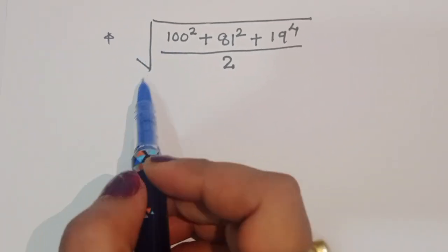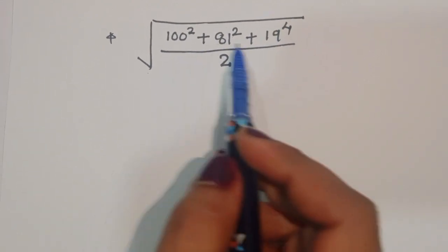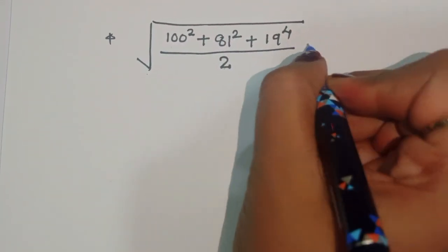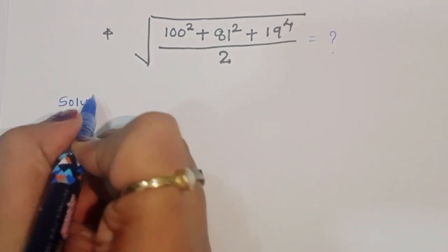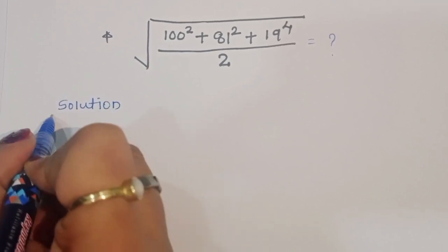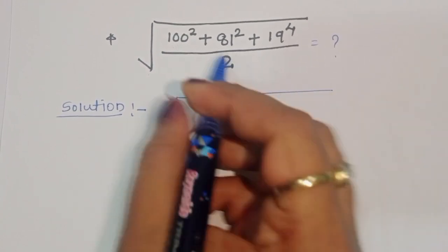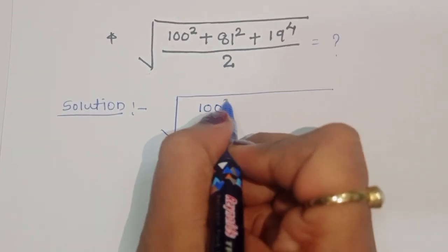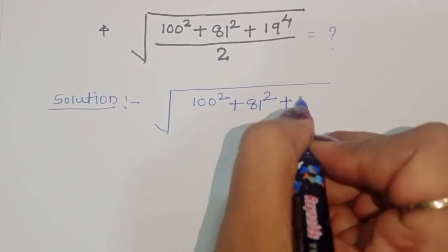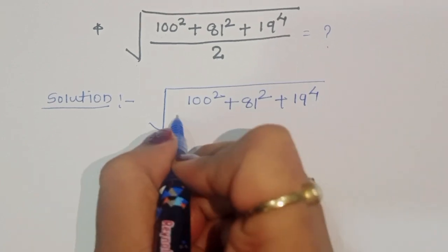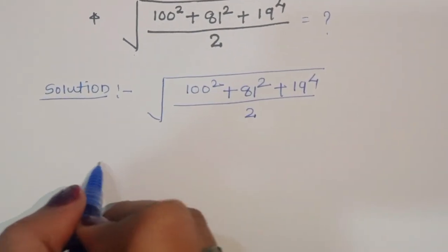The question is: given square root of 100 squared plus 81 squared plus 19 to the power 4 divided by 2, we have to find out the value of this term. Let's see the solution — how we can find out the value of this term.